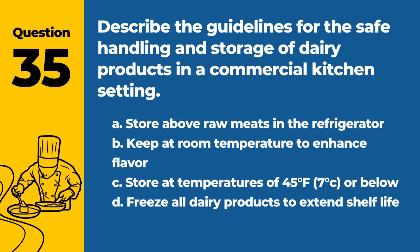Question 35. Describe the guidelines for the safe handling and storage of dairy products in a commercial kitchen setting. A. Store above raw meats in the refrigerator. B. Keep at room temperature to enhance flavor. C. Store at temperatures of 45°F, 7°C, or below. D. Freeze all dairy products to extend shelf life. Answer: C. Store at temperatures of 45°F, 7°C, or below. Dairy products should be stored at temperatures of 45°F, 7°C, or below to prevent bacterial growth and maintain quality.